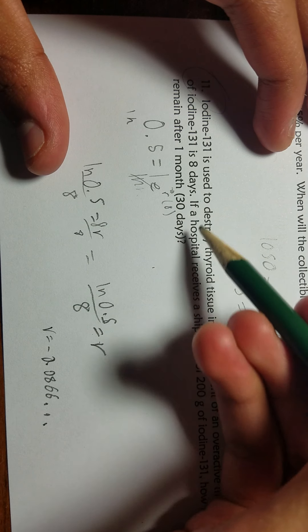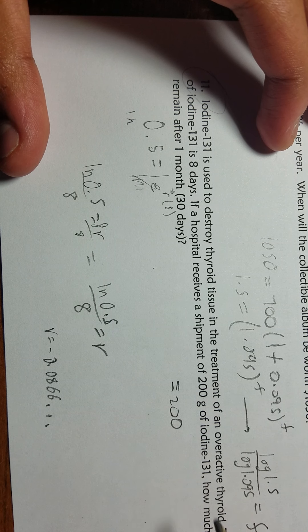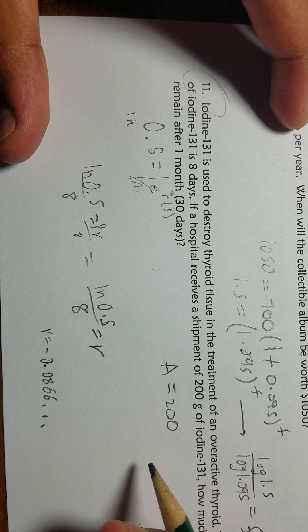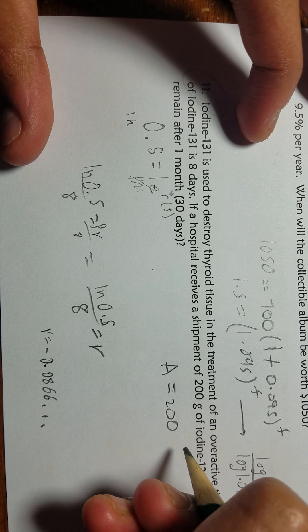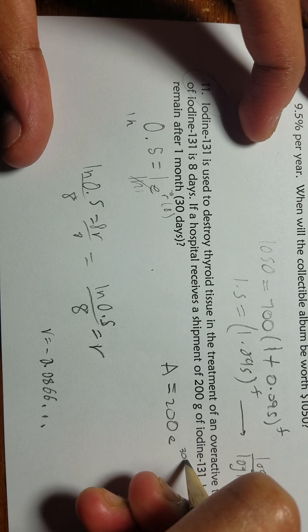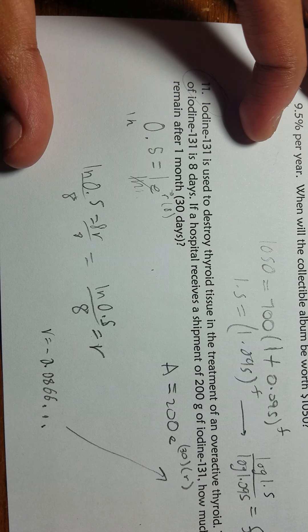The half-life is eight. If the hospital receives a shipment of 200 grams, so 200 grams is your initial amount. How much would remain? You're trying to find that out after one month. Our time period is one month, so 30 days. We have e here, one month is 30 days, and we have our rate. There's an arrow there showing that.